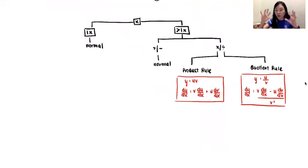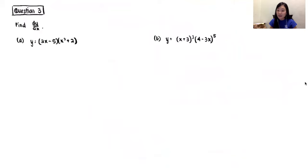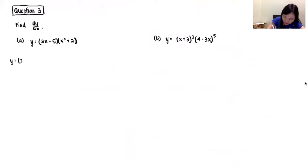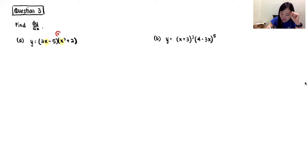So to recap: every single time you want to differentiate, look at how many x's they have. If only one x — normal method. More than one x — check their relation: plus/minus uses the normal method, times or divide requires the formula. Now let's look at Question 3 — find dy/dx. The first thing, based on what I told you, is to check how many x's they have. I see two x's, one in the first bracket and one in the second bracket — they are in a times relation, so I should use the formula.